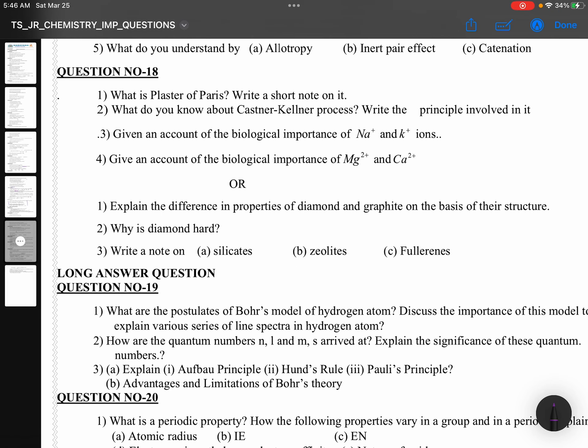Eighteenth question: What is Plaster of Paris? Write a short note on it. What do you know about Castner-Kellner process? Write the principle involved in it. Biological importance of sodium and potassium ions. Magnesium and calcium ions. As it is, you can see in NCERT book or Telugu Academic book. Explain the difference in properties of diamond and graphite on the basis of their structure. Diamond hard, silicates, zeolites, fullerenes.